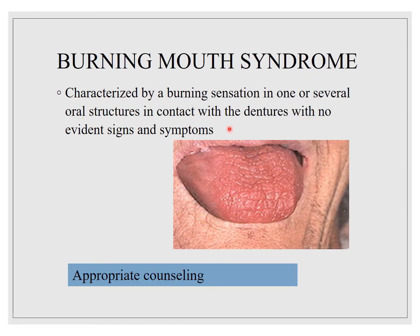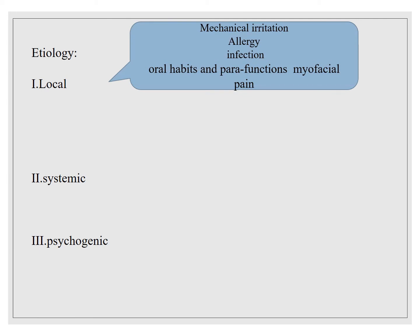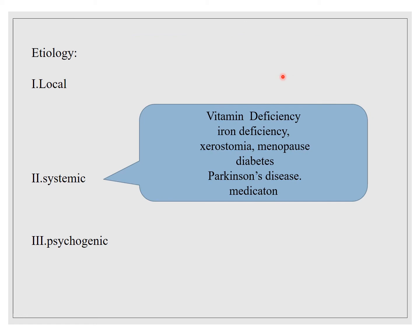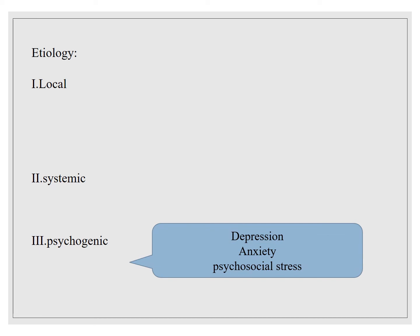Coming to burning mouth syndrome — local factors include mechanical irritation, allergy, infection, oral habits, and parafunctional habits, which can lead to myofascial pain. Systemic factors include vitamin deficiency, iron deficiency, xerostomia, menopause, diabetes, Parkinson's disease, and other medications. Psychogenic causes include depression, anxiety, and psychosocial stress.